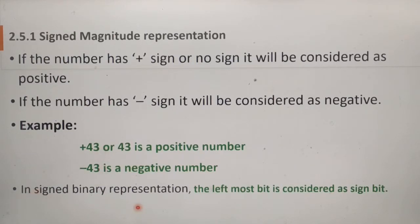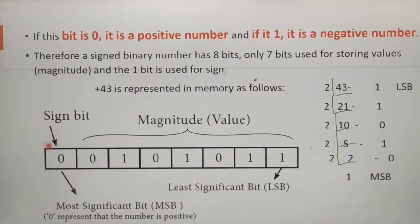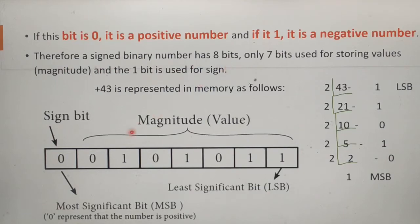In signed binary representation, the leftmost bit is considered the sign bit, also called the parity bit or most significant bit. If it is zero, it is a positive number; if it is one, it is a negative number. A signed binary number has eight bits. Only seven bits are used for storing the binary values, while the remaining one bit is used to represent the sign — whether it is a positive or negative number.